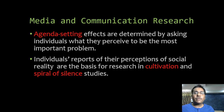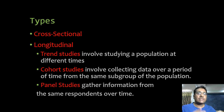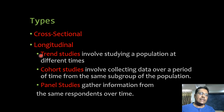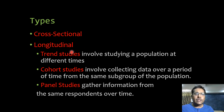Before going ahead with the details it's important to understand two major types of survey. A cross-sectional survey is done at one point in time — we ask people's opinions, attitudes, behavior, and knowledge just once. A longitudinal survey is done at different times, either with the same respondents or with other respondents from the same population.